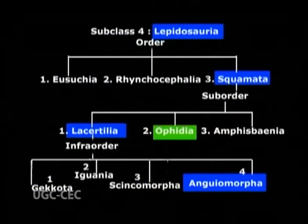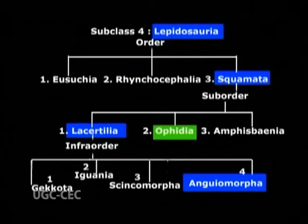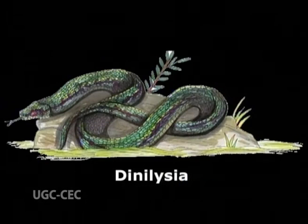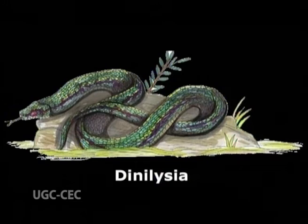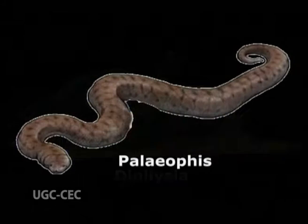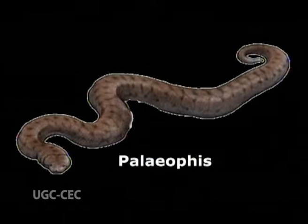Suborder 2, Ophidia, means Serpentes. Examples Dinilysia and Palaeophis are extinct.